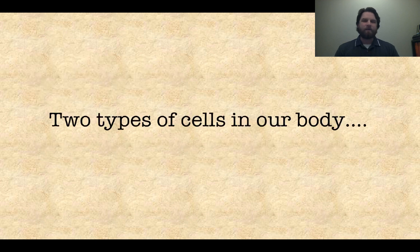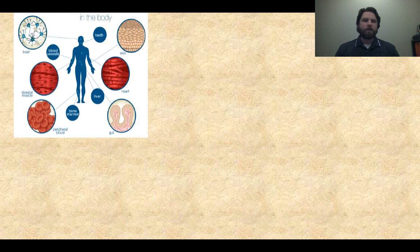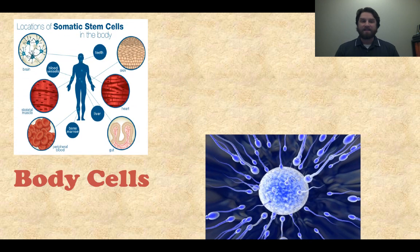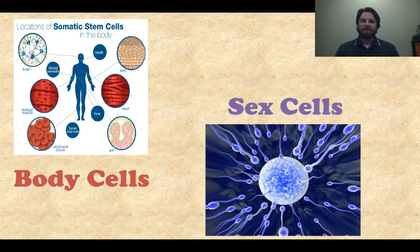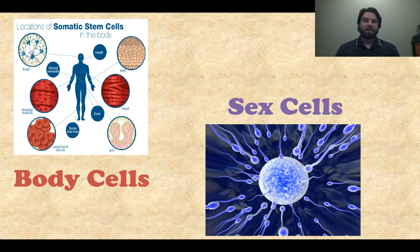First, let's talk about two types of cells that are in our body. We have body cells and we also have sex cells. Body cells are the cells that make up any tissue in the body, like your teeth, blood vessels, liver, brain, bone marrow — all of that stuff. And the sex cells are very specifically, in humans, something like the sperm and the ovum. These things come together to form a zygote, and that's how fertilization occurs.